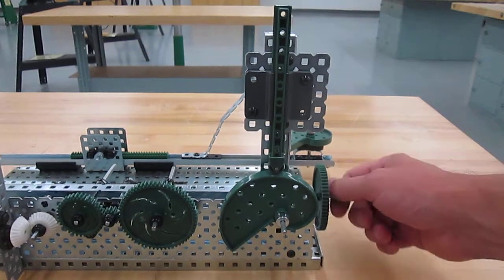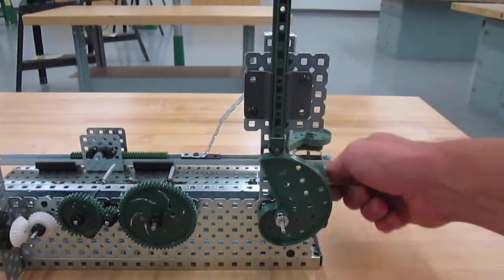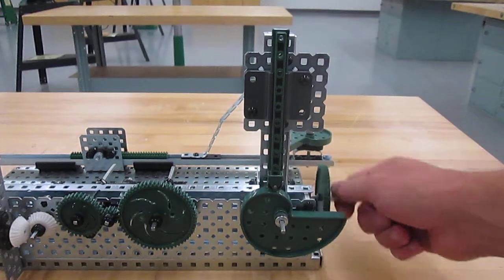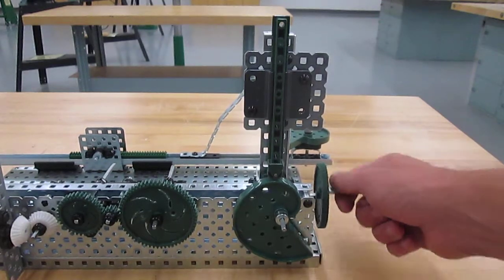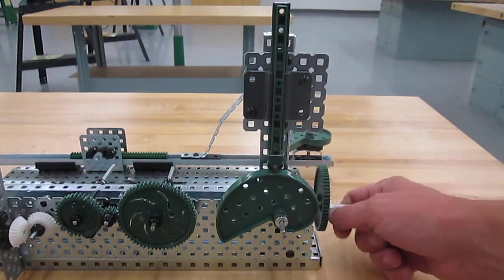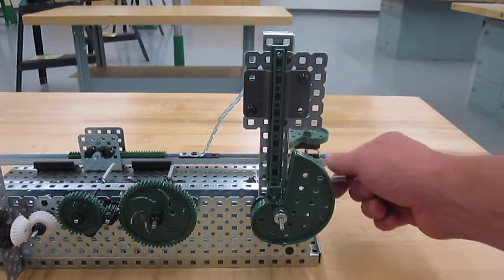So when we turn the cam, the follower is going to follow that edge. Right now, my mechanism is going slow because I have a worm wheel on the back, so normally when you turn this, it will turn much faster, but I have two mechanisms going together.